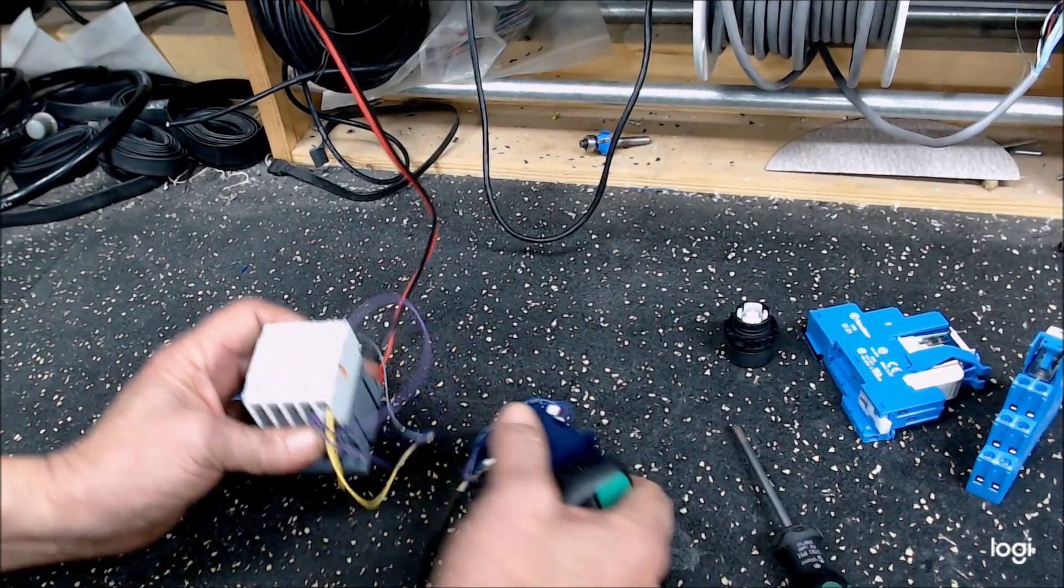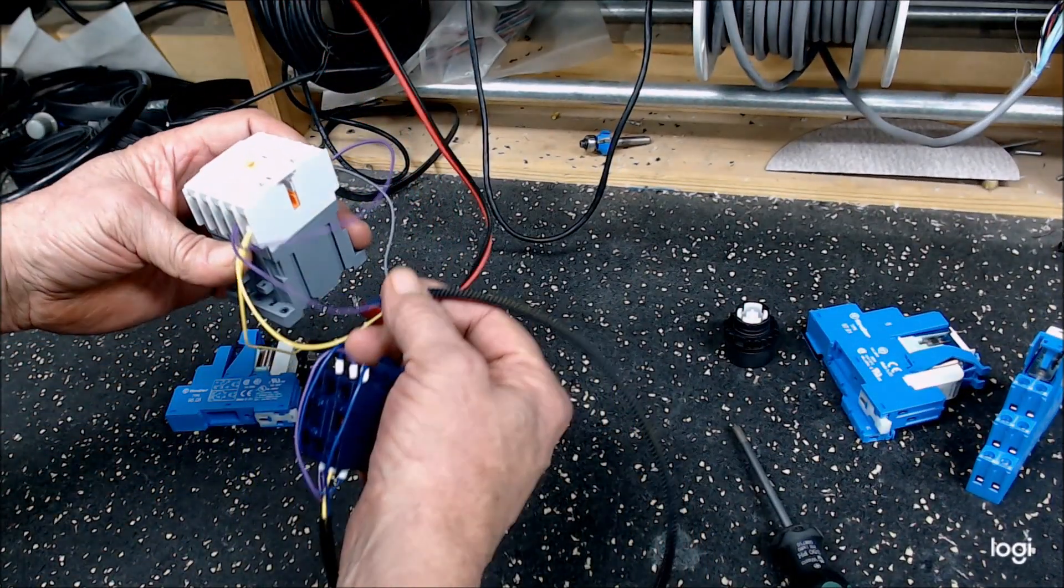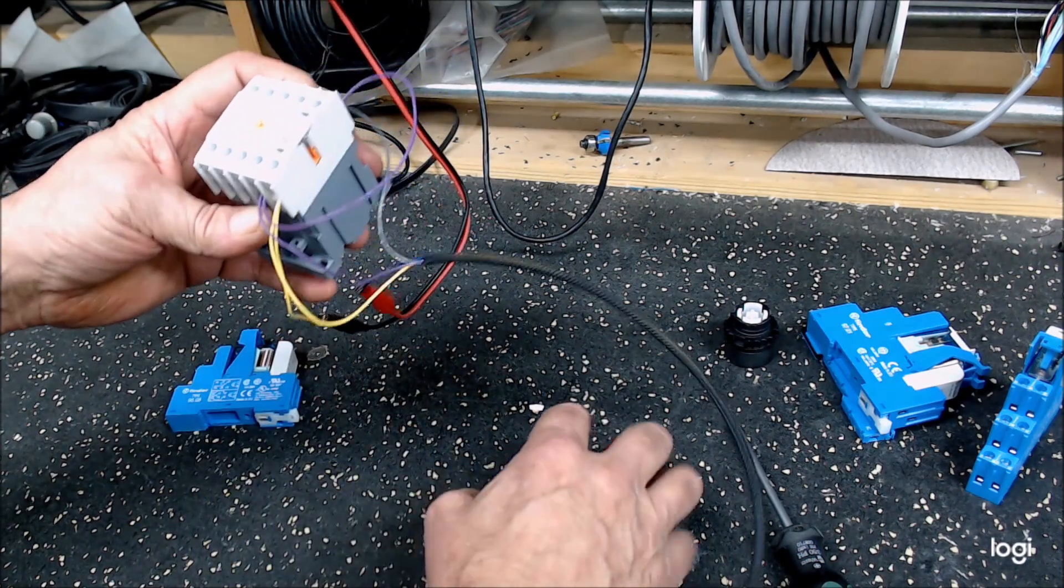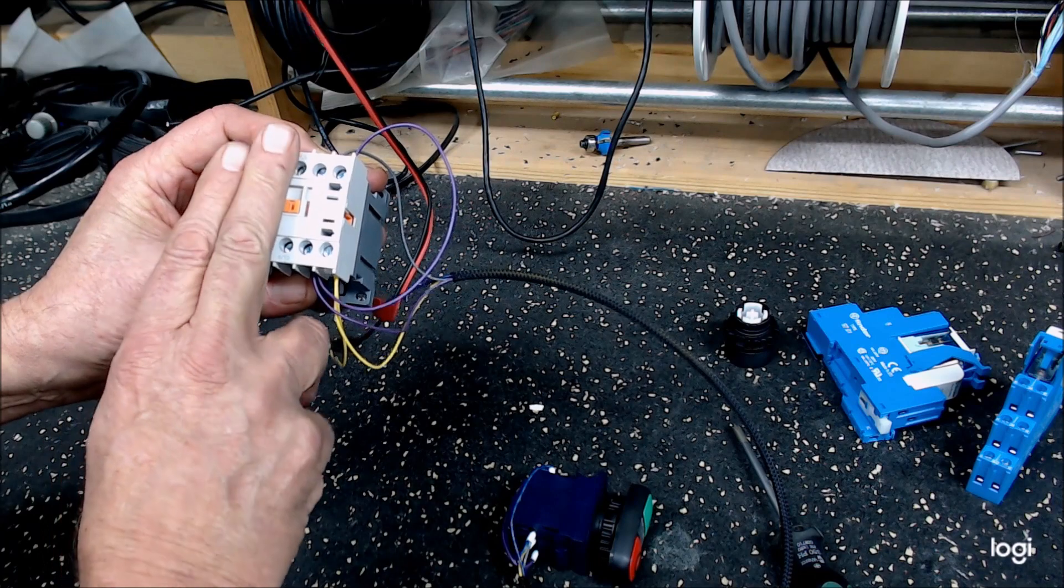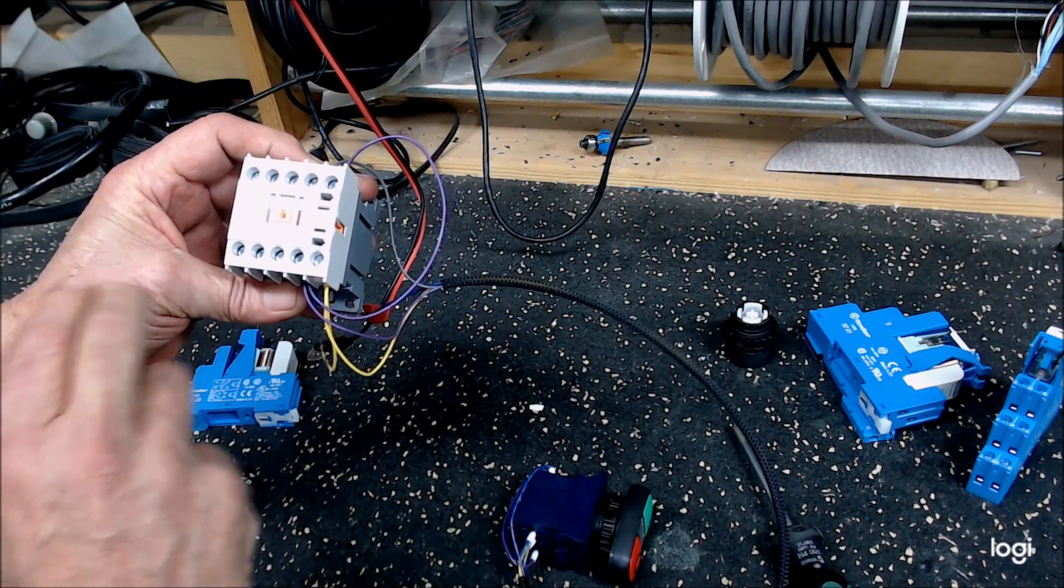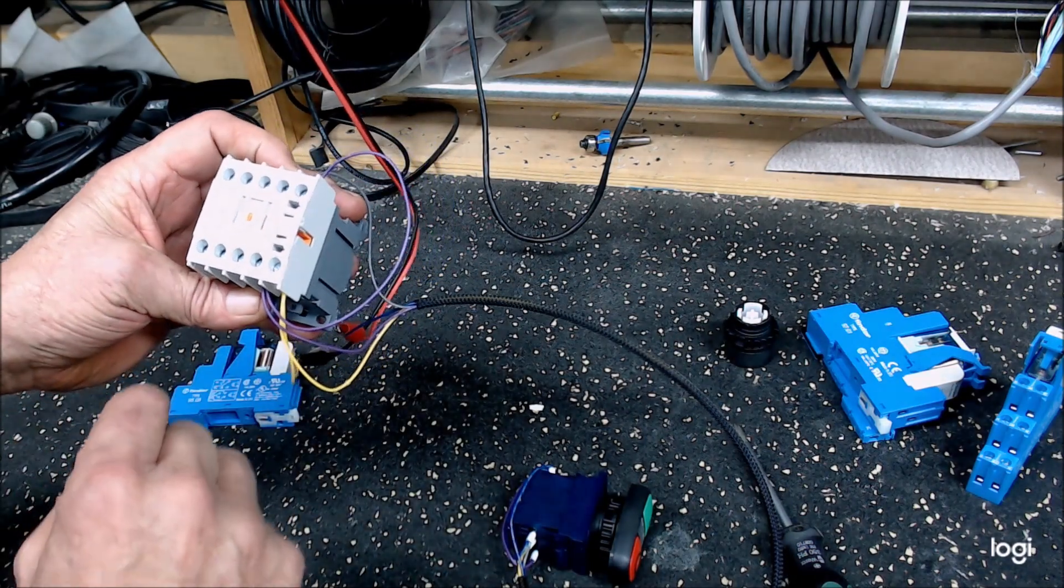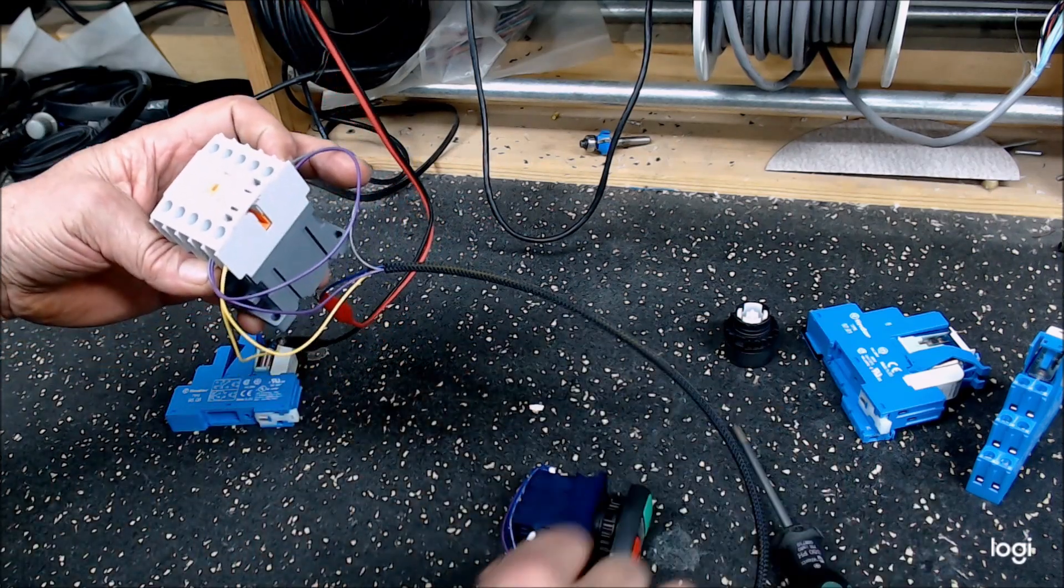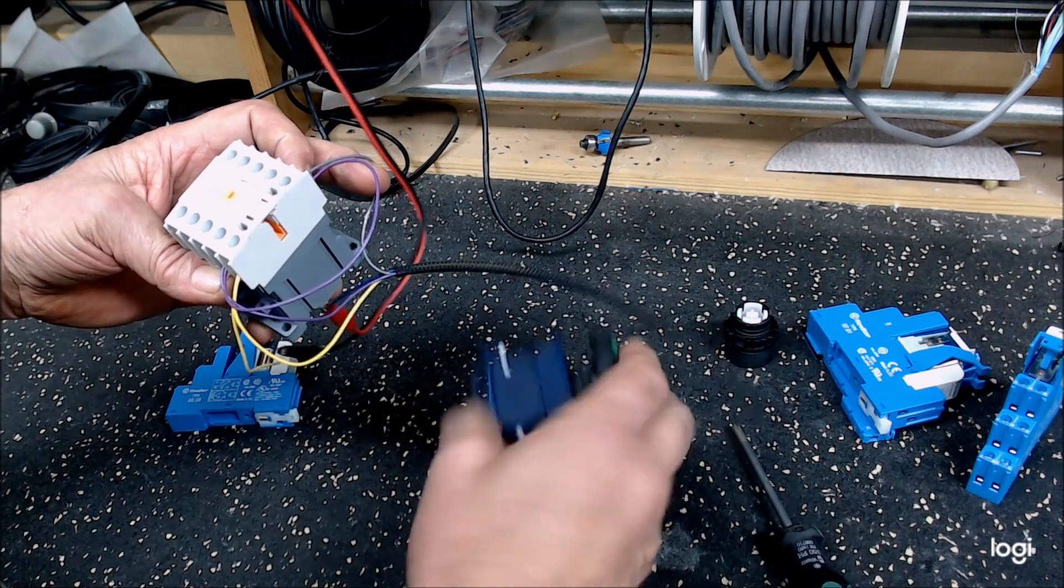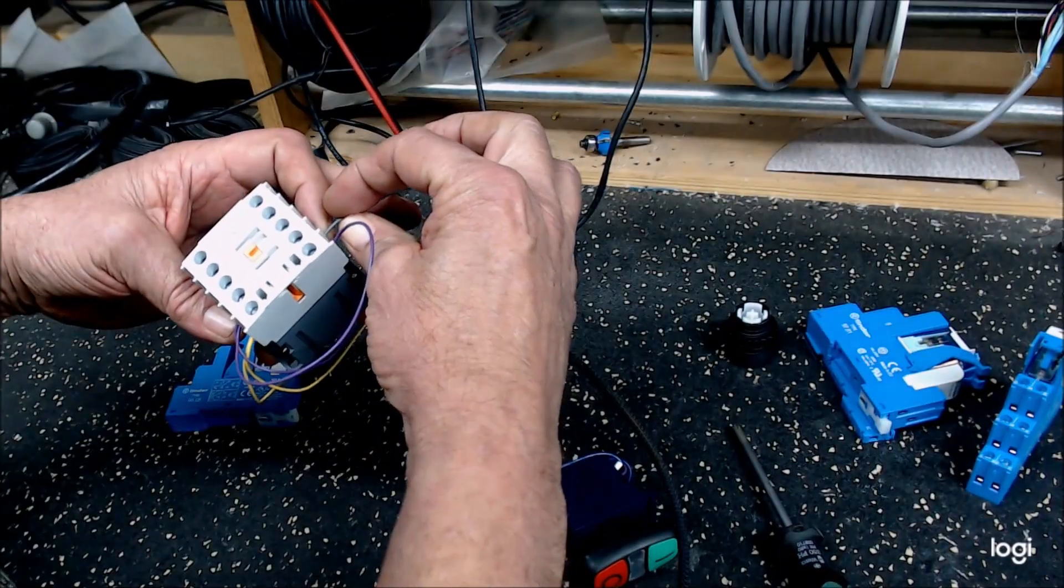So the contactor - again, this could be used for high voltage, higher draws. This actually isn't a very large contactor, but nonetheless it'll show what's going on. My 24 volt power that comes through the normally closed switch goes to the common of the normally open. When that contact is closed, it energizes the coil.